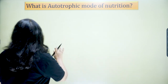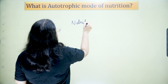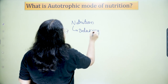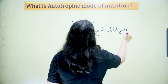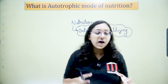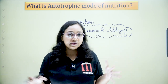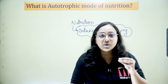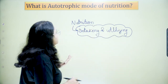Let's start with what is autotrophic mode of nutrition. First, let's revise nutrition. Nutrition is a process of intaking food and utilizing it, which is a very major function of our body. How we intake food and utilize it is very different in every organism. Based on that, we identify two types of nutrition: autotrophic mode and heterotrophic mode. Autotrophic mode is our concern for today.